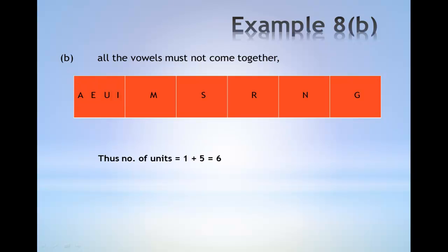Thus the total number of units is given by one group of four vowels and the other consonants, which gives six units in total. These six units can be arranged in six factorial ways.